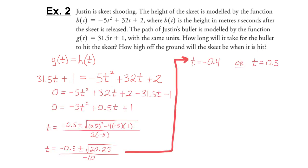You combine the two equations, set it equal to 0, simplify, and you end up with 0 equals negative 5t squared plus 0.5t plus 1. You can't factor this, so use the quadratic formula. Running through it once with a plus sign gives one answer; with a negative sign gives a second answer. It looks like we have two different points of intersection for this line and parabola.